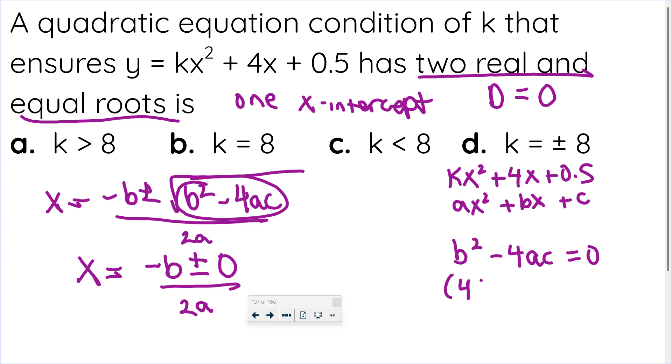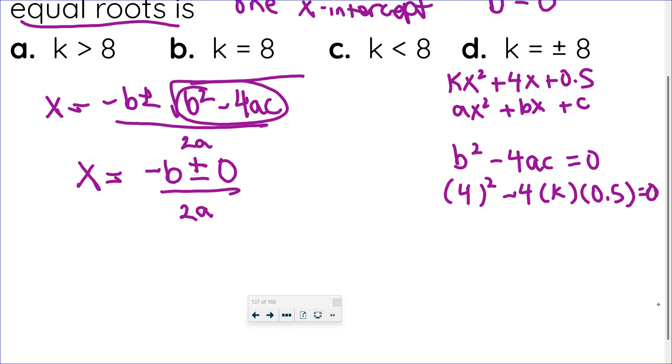And now let's just substitute our values in. So I know that b is 4. I know that a is k. And my c value is 0.5. So I just have this equation that I need to solve. So I have 4 squared, which is 4 times 4, or 16. Negative 4 times k is negative 4k. And half of that is negative 2k.